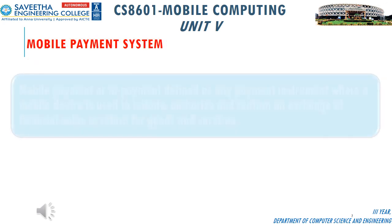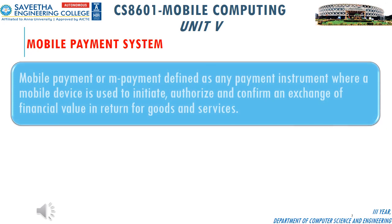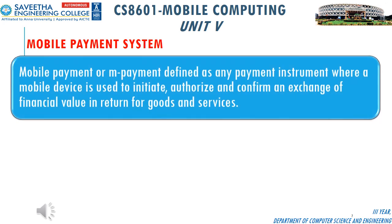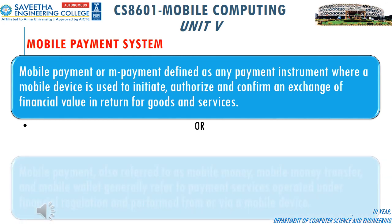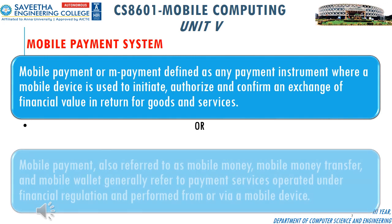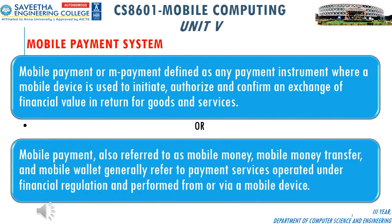There are two definitions for mobile payment systems. First, mobile payment or m-payment is defined as any payment instrument where a mobile device is used to initiate, authorize, and confirm an exchange of financial value in return for goods and services. Second, mobile payment — also referred to as mobile money, mobile money transfer, and mobile wallet — generally refers to payment services operated under financial regulation and performed from or via a mobile device.